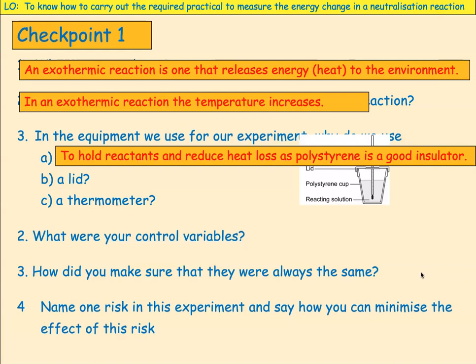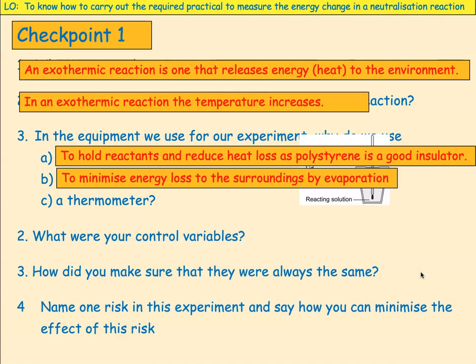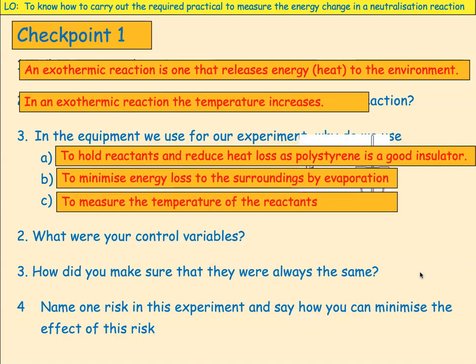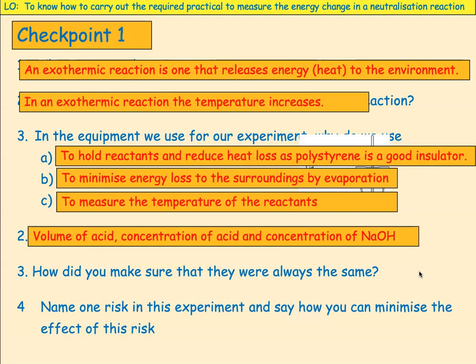Why did we use a lid? To minimise the energy lost to the surroundings by evaporation. Why did we use a thermometer? To measure the temperature of the reactants. What were your control variables? The volume of acid, the concentration of acid, and the concentration of sodium hydroxide.